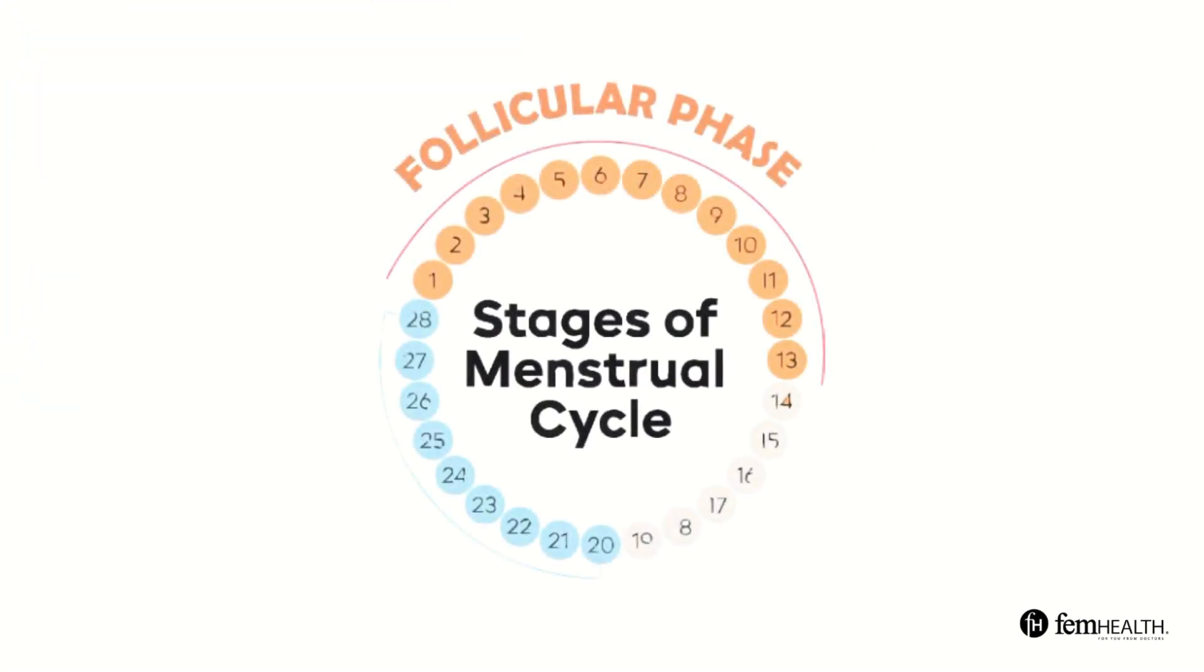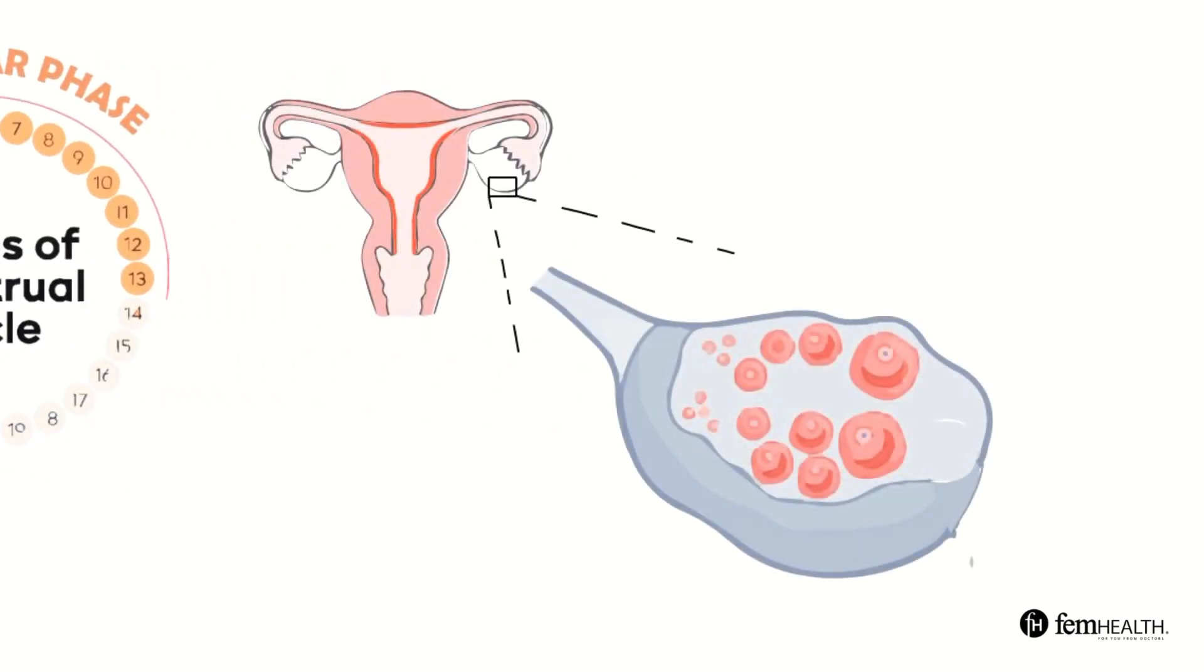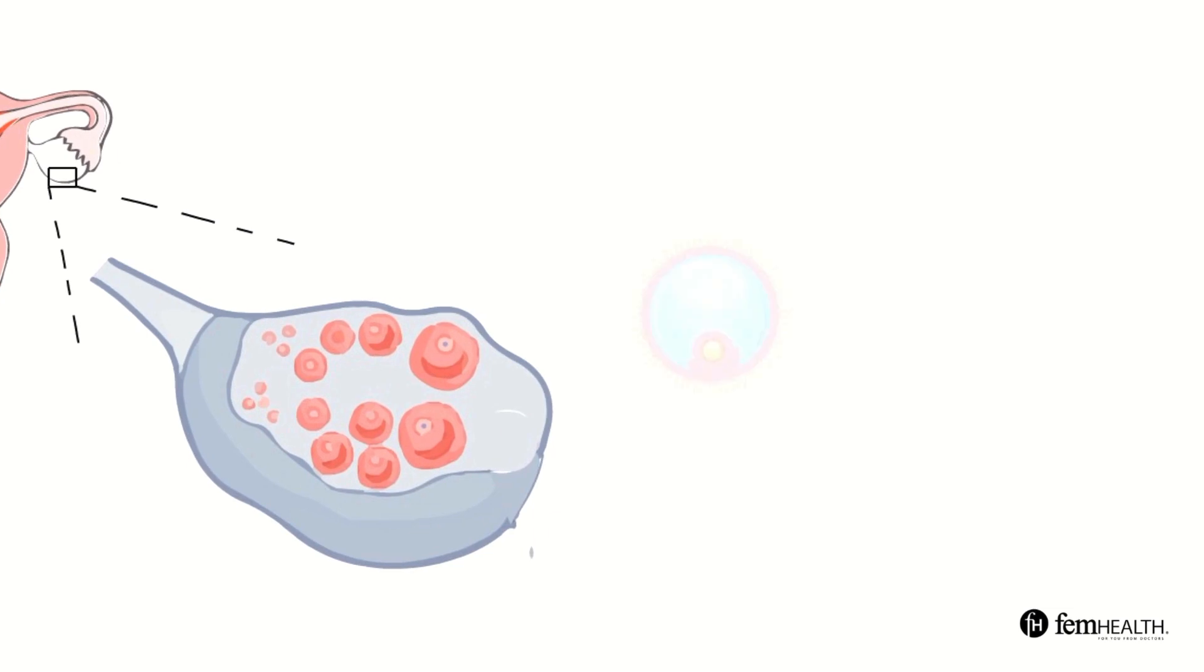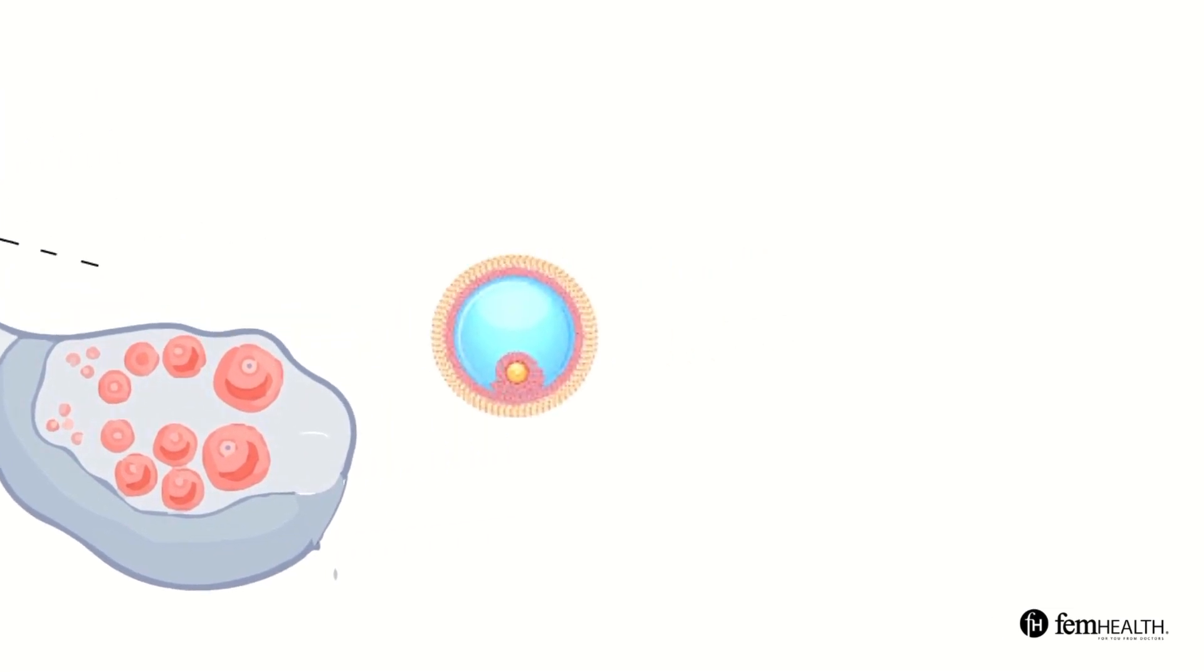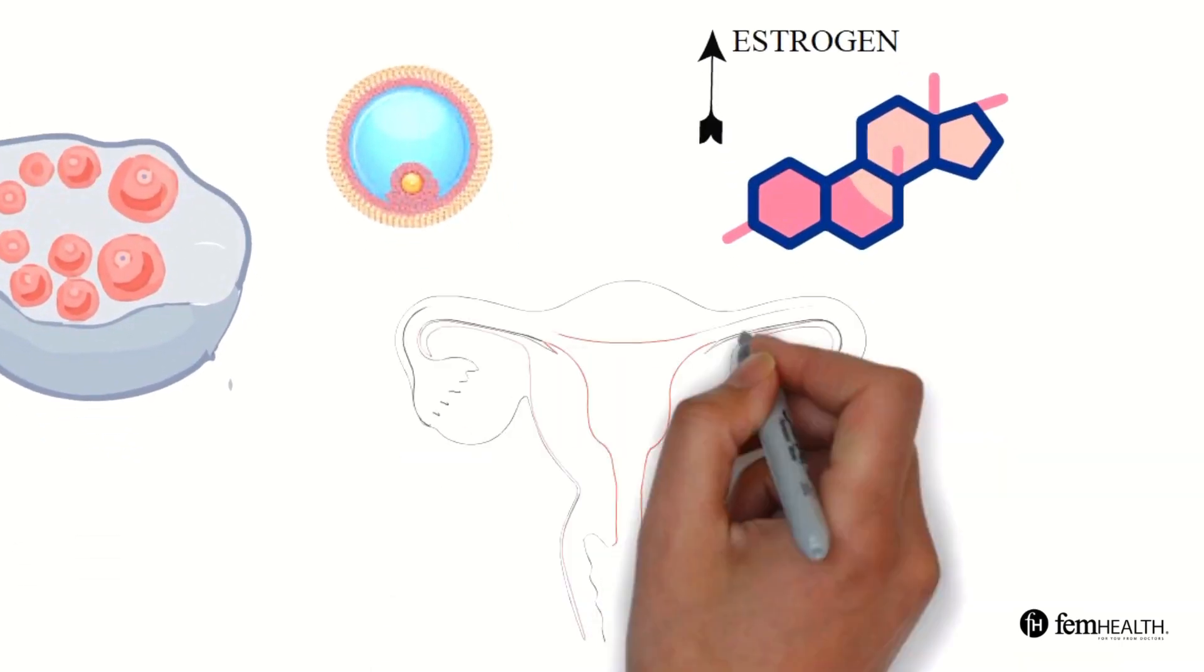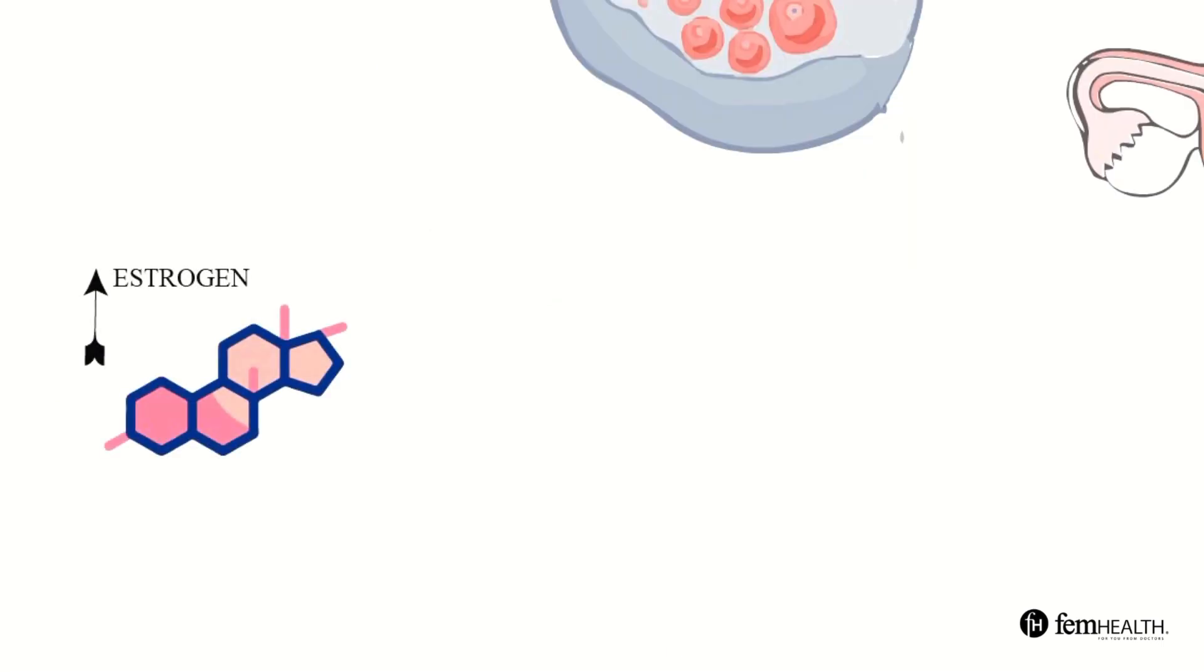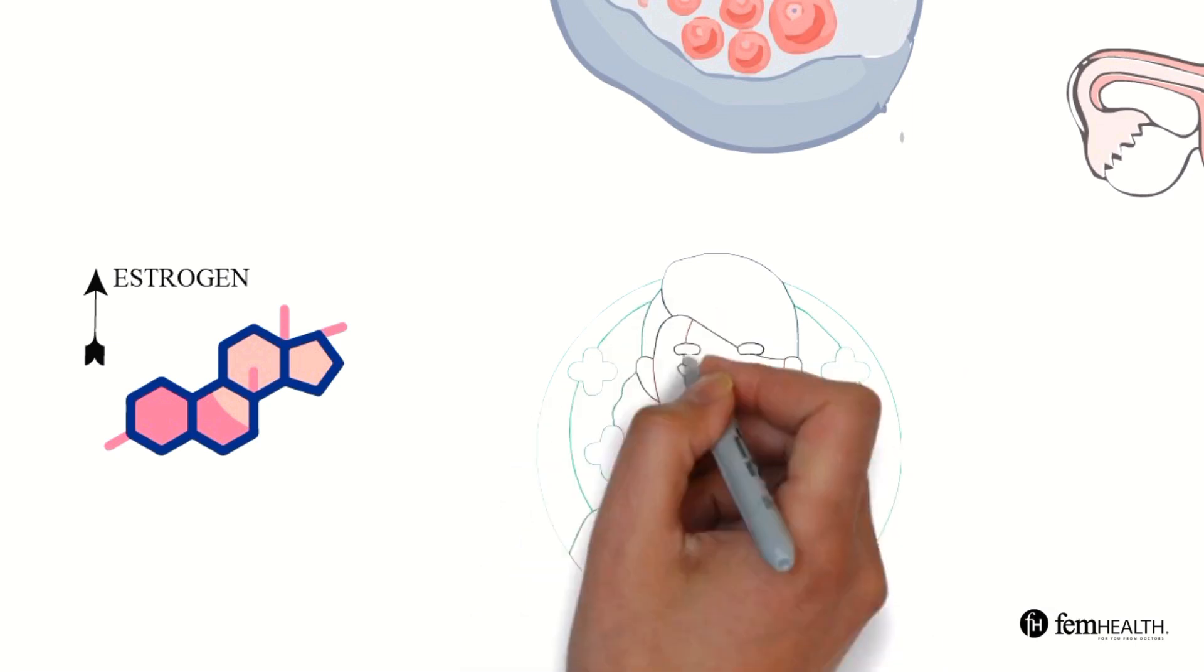Phase two is the follicular phase and it actually overlaps with the menstrual phase. The follicular phase is days one to thirteen on an average 28 day cycle. The ovaries will grow small sacs called follicles and each follicle contains an egg. During the follicular phase hormones like estrogen rise which can help the uterus to build a new lining. As estrogen levels go up many people will start to feel more energetic as well as more positive.